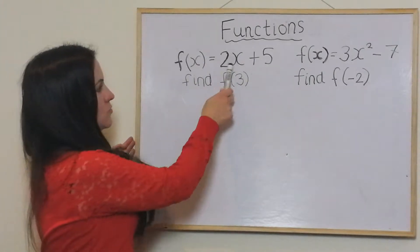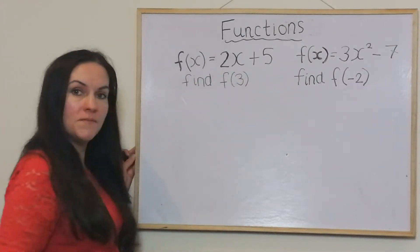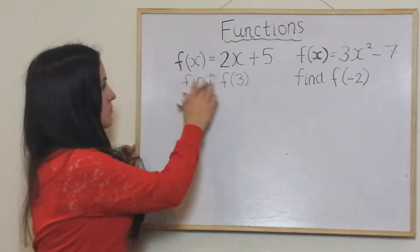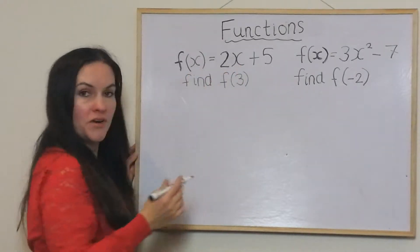f of x is equal to 2x plus 5, find f of 3. So all you do is substitute the 3 in where the x is.